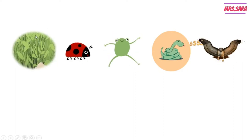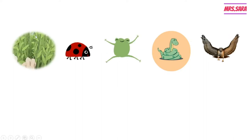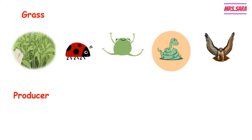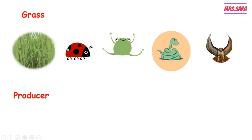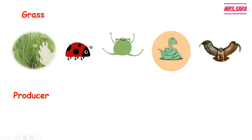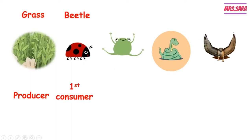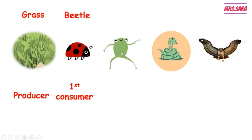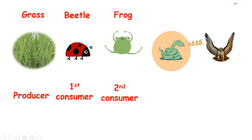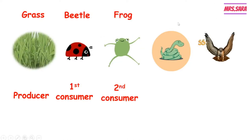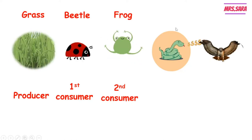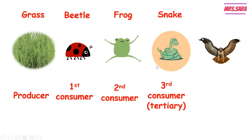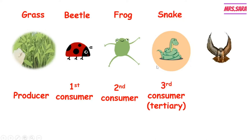Can you remember that the green plant is considered as a producer? So the ladybug eats the grasses — the ladybug eats the producers — so the ladybug or petal is considered a first consumer. The frog eats the ladybug, so the frog is a second consumer. The snake eats the frog, so the snake is a tertiary or third consumer. And the hawk eats the snake, so it is considered a fourth consumer.